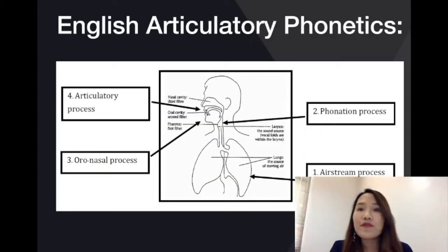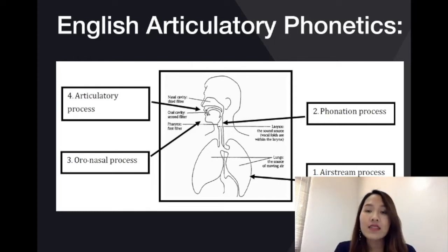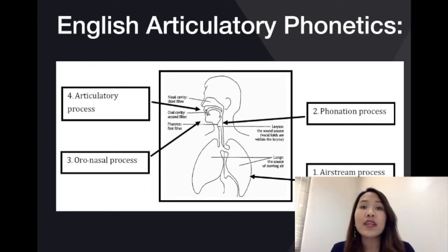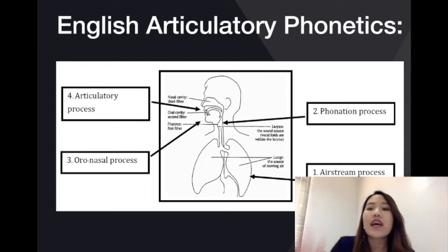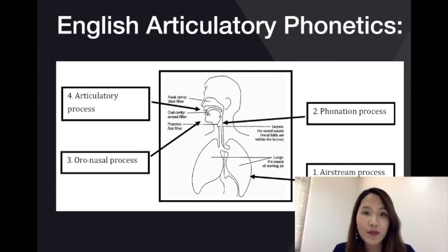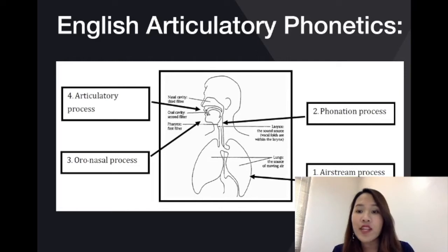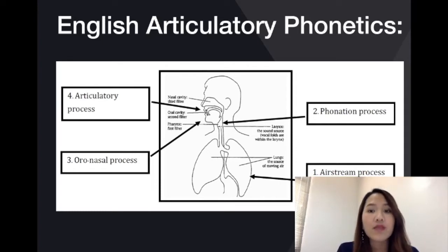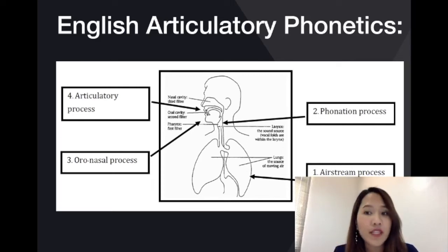Then we move to talk about English articulatory phonetics. Articulatory means how to make sounds. English articulatory phonetics has four branches: the first one is airstream process, the second one is phonation process, the third one is oral-nasal process, and the last one is articulatory process. In previous video clips, we already talked about airstream process and phonation process.